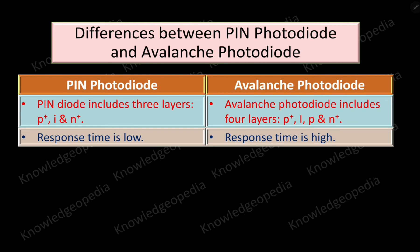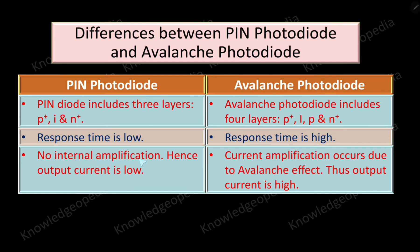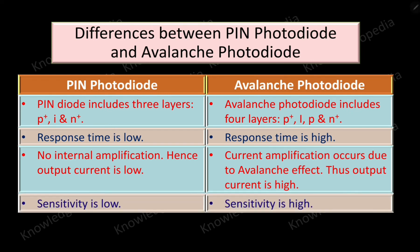The response time is low in case of PIN photodiode but it is high in case of avalanche photodiode. Further, there is no internal amplification in case of PIN photodiode, and hence we get a low output current. In the case of avalanche photodiode, there is internal amplification which occurs in the P region — current amplification occurs due to the avalanche effect — and hence we get a high output current.